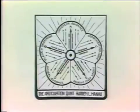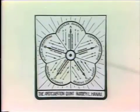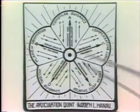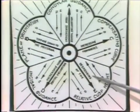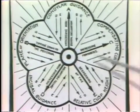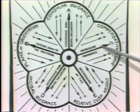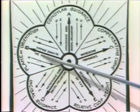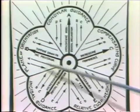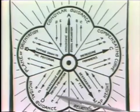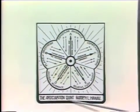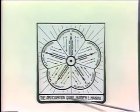In 1926, Rudolf L. Hanna presented to the American Dental Association five factors: relative cusp height, compensating curve, condylar guidance, plane of orientation, and incisal guidance. These five factors he called the articulation quint.